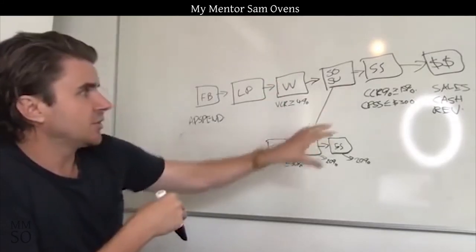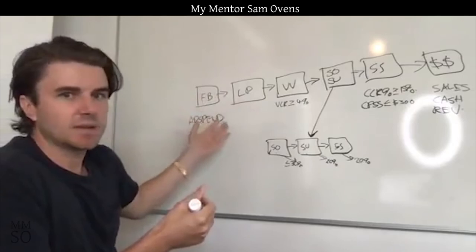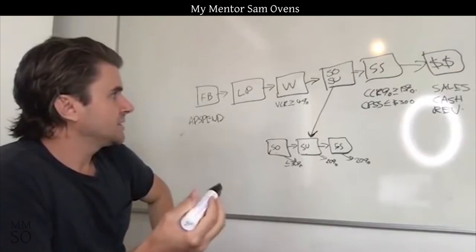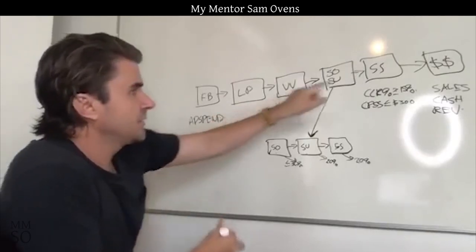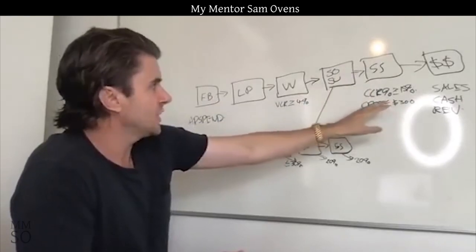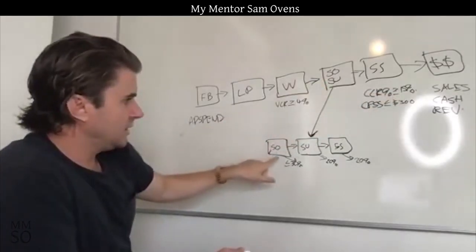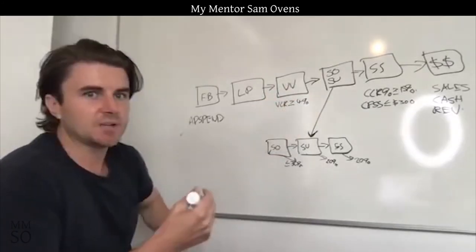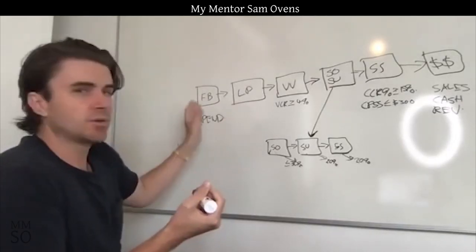If all of those scenarios are true, we'd try to fix the value video. Also, it can be the traffic — you could just be targeting the wrong people or the ads might be off. Then we would look at the landing page conversion rate. If the sales and cash numbers were good, call conversion rate was good, drop-offs were good, value video was converting well, but we're still not making money, then we're looking at the landing page and then the ads.